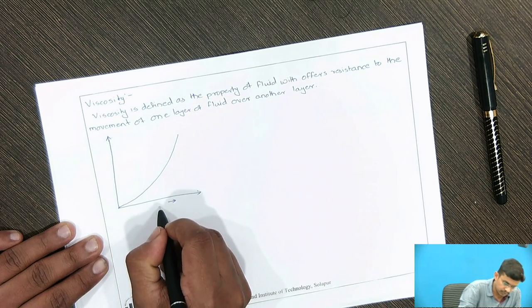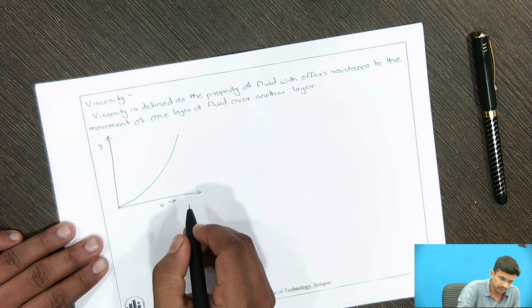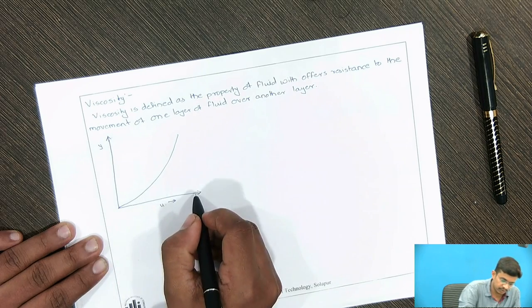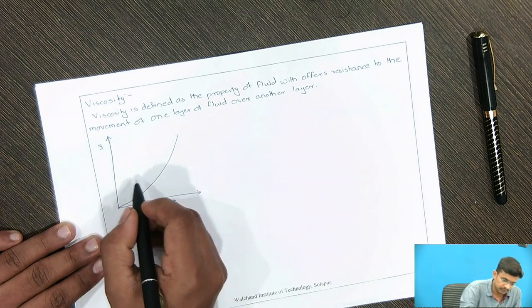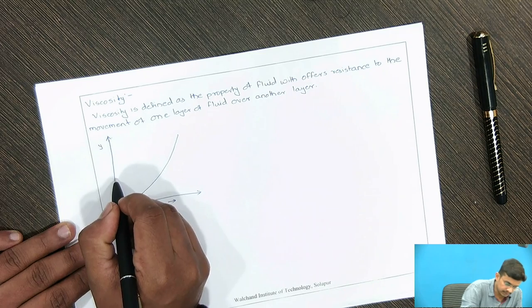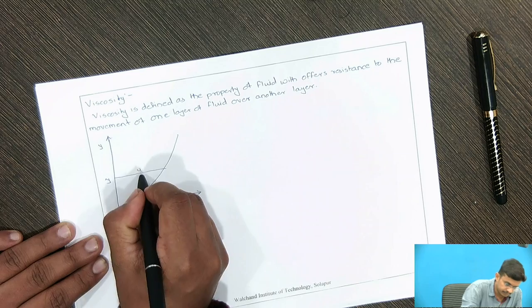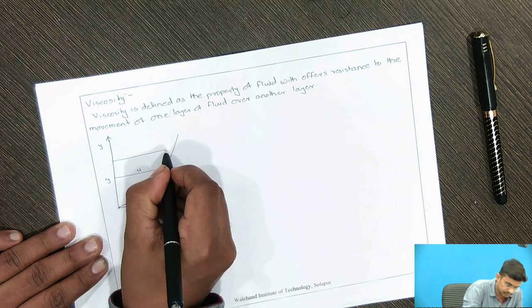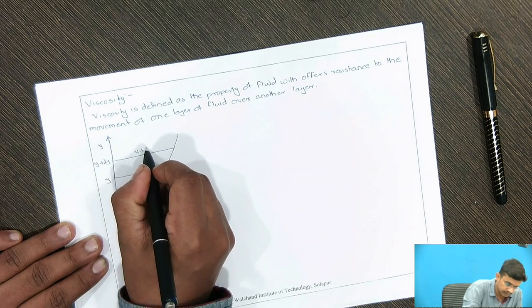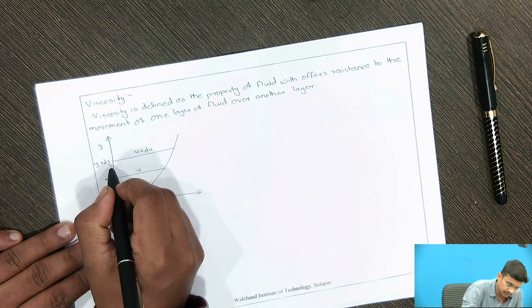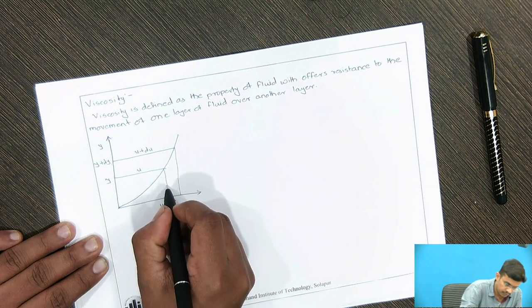This will be our velocity u, and this will be our height of the layer from the solid boundary. This is a solid boundary. As the height of the layer increases, the velocity also increases. Suppose at distance y, the velocity will be u, and at distance y plus dy, the velocity will be u plus du. Here we get the height difference and here we get the difference in velocity.